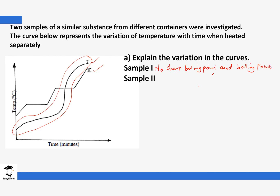When you look at curve two, you can see it has sharp boiling points and melting points. Comparing the two curves: for curve one, at the melting point, it does not have a specific melting point — it melts over a range of temperatures. For curve two, you can see constant melting points and a constant boiling point, unlike curve one.